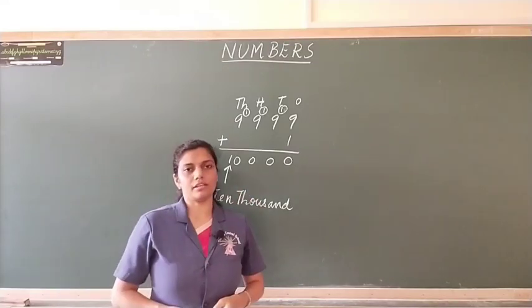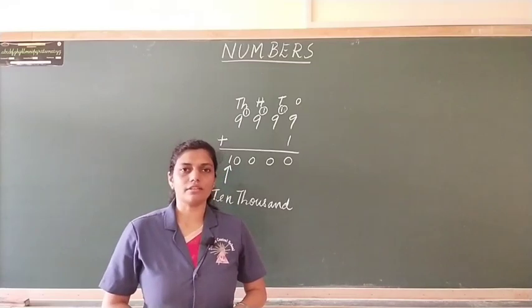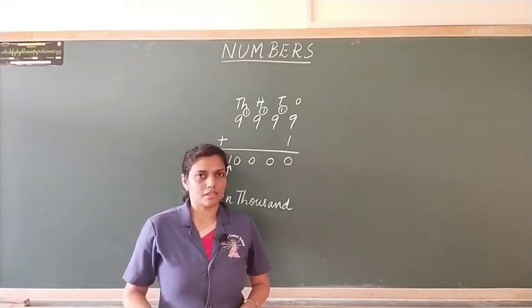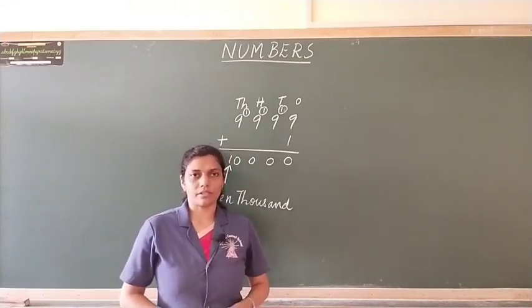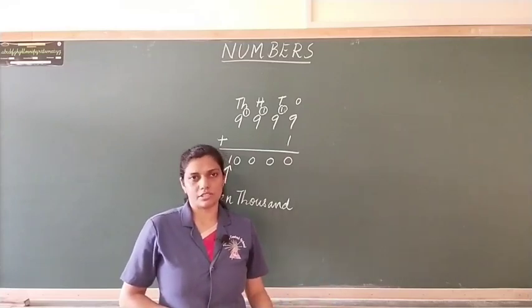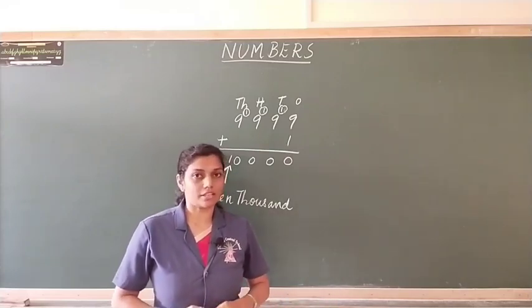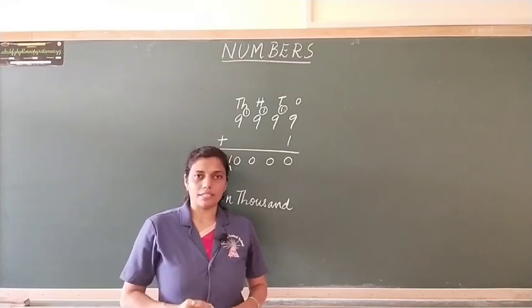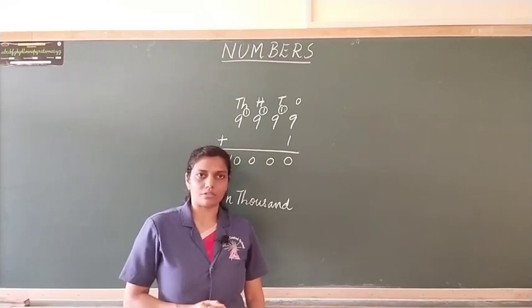From here, when you start counting, we get 10,001, 10,002, 10,003 and so on. Then, we reach the largest 5-digit number and what is that largest 5-digit number? It is 99,999.